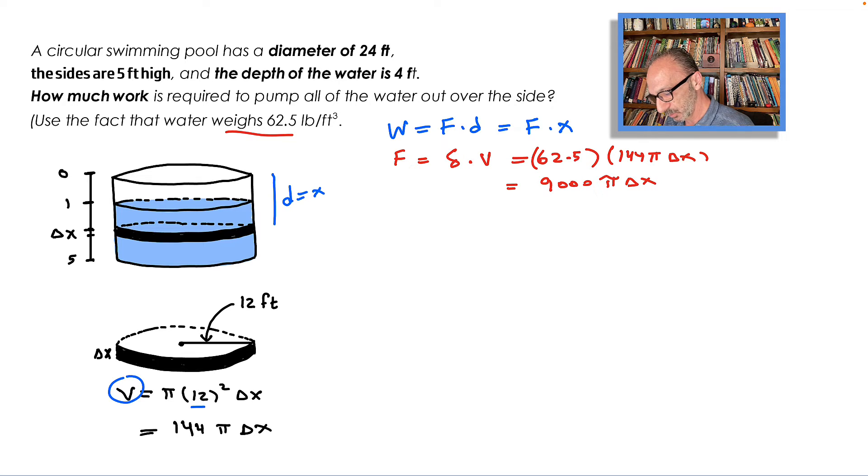Going back to the work, the work is force times distance. The force is 9000π Δx, the distance is x. The work is the work to take one slice at a distance of x all the way to the top of the swimming pool.